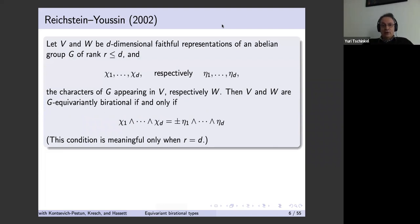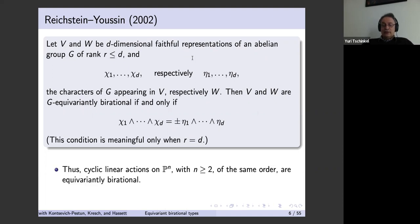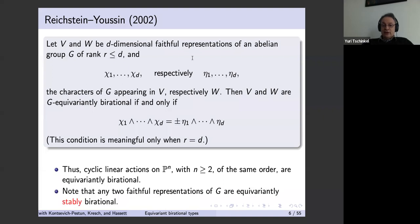There is a more sophisticated invariant for actions of abelian groups going back to Reichstein and Youssin. You look at linear representations of abelian groups of some rank and the characters appearing in those representations. There is a criterion: two such representations are equivariantly birational if and only if their determinants are equal up to ±1. The determinant is zero if the rank of the abelian subgroup is strictly less than the dimension of the representation. Cyclic group linear actions on P^n for n ≥ 2 are all equivariantly birational, and faithful representations are always stably birational.